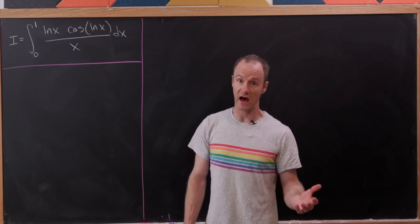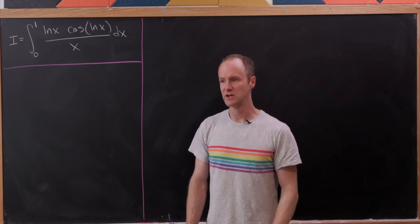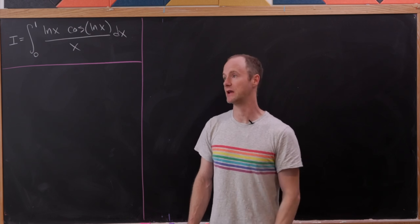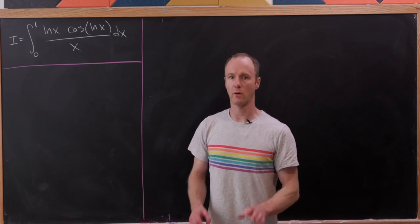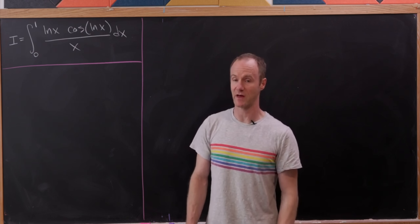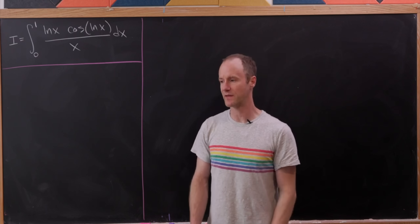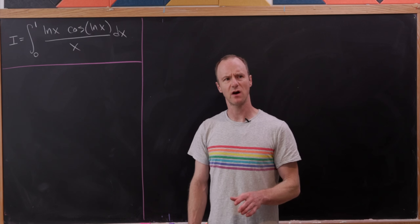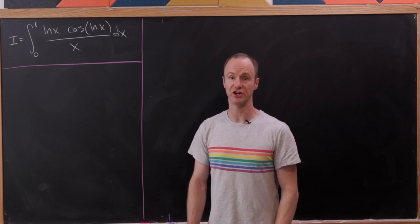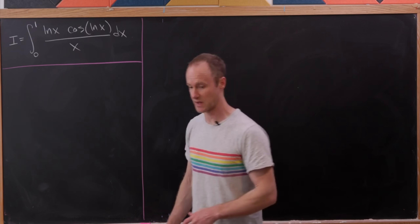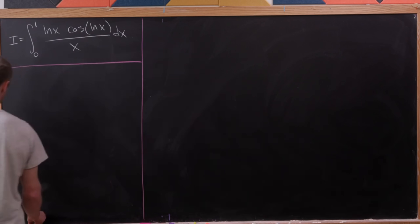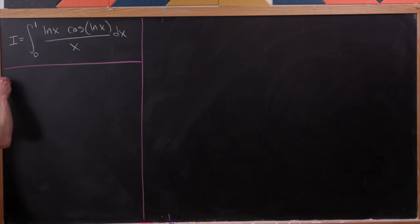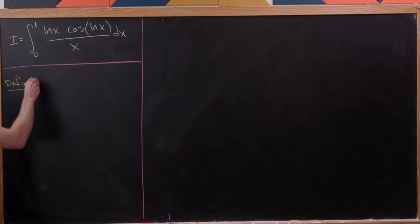We're going to evaluate this, or try to evaluate this, using a complicated method, and then explore a simpler method as well. The complicated method is Feynman's trick, which is also called the Leibniz rule for differentiation under the integral sign. In order to do that, we need to define a function that looks like this integral but has a new parameter.